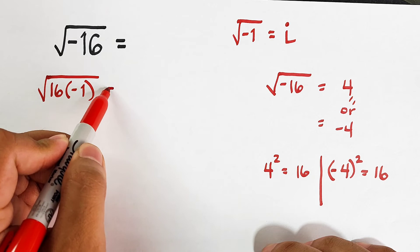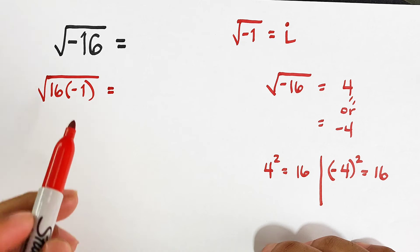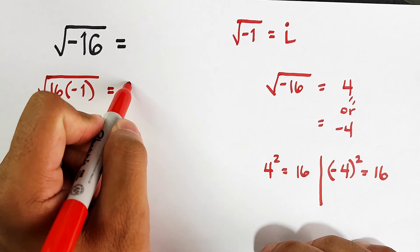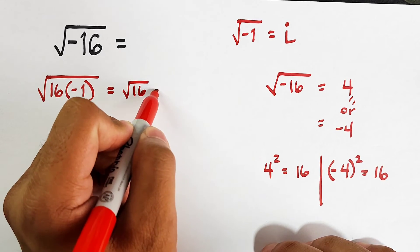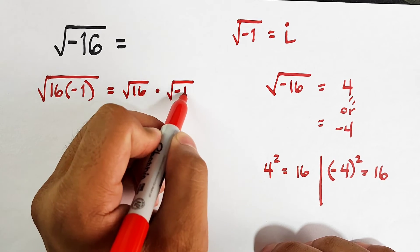Now, we have a property in which we can separate them into two radicals. First, we have the square root of 16 times the other one, which is the square root of negative 1.